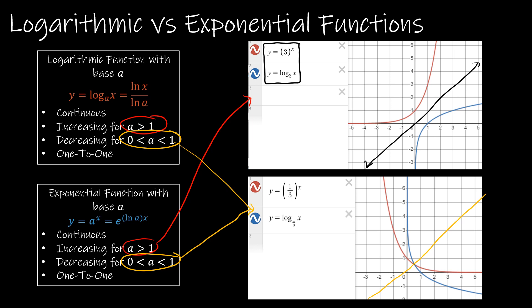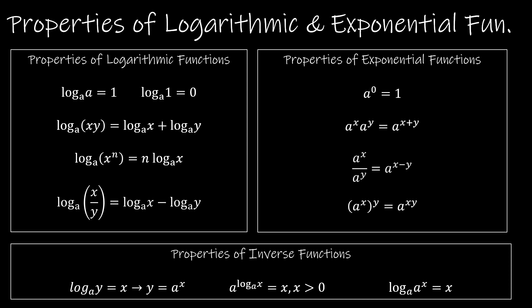We can relate the function log base a of x by rewriting it as the natural log of x over the natural log of a — that's just the change of base formula. Similarly, the exponential function y equals a to the x can be rewritten in terms of the natural log as e to the natural log of a times x.